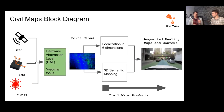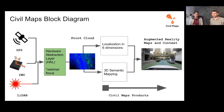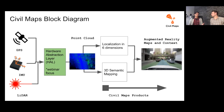Different customers use different sensor suites and combinations of different models of IMUs, GPS, and LiDAR units, in addition to things like stereo cameras. For us to be able to dynamically load shared object libraries — essentially our drivers compiled as shared objects — and dynamically load those to serve our customers seamlessly through JSON config files that point to different shared object files, as much as we can abstract out the hardware, the better we can serve our customers. It also allows our hardware abstraction layer to be applied to many different applications outside of just the AV world.